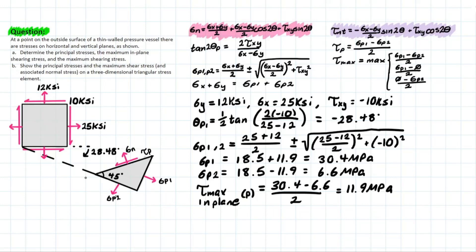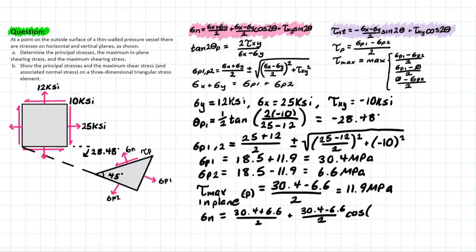To complete the stress element, we also need the normal stress on the max shear plane. Using the stress transformation equation with values from before: (30.4 + 6.6) / 2 + (30.4 − 6.6) / 2 × cos(2 × 45°), plus zero shear stress since there's no shear on these faces. This leaves us with a normal stress equal to 18.5 MPa.